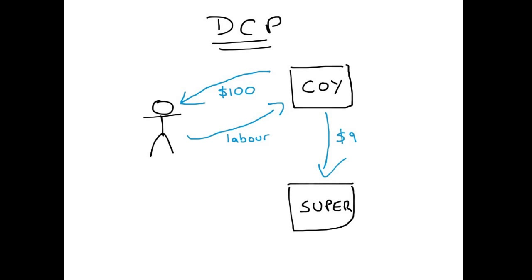The obligation for the company is limited to them making at least whatever they said they're going to put in. So if they said they're going to put $9 in and they only put $7 in, their obligation is $2, and they would have a liability for that $2. But as long as they're putting their $9 in, there's no liability sitting for them at all.